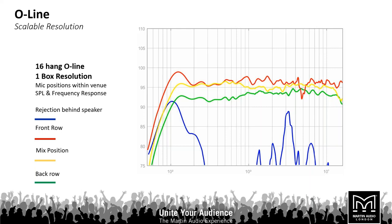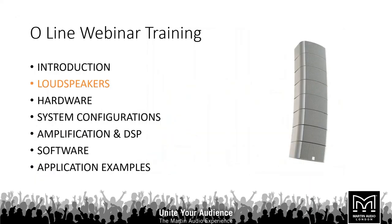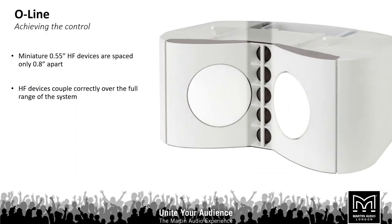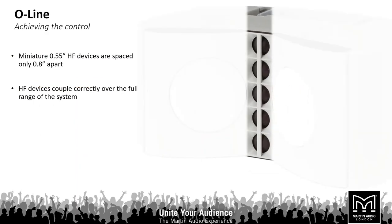Looking at the loudspeaker itself, we have small 0.55-inch HF devices spaced 0.8 inches apart, running right down the center of the O-Line cabinet. We use this small spacing to control the vertical dispersion without creating comb filtering in the vertical axis from the high-frequency section.